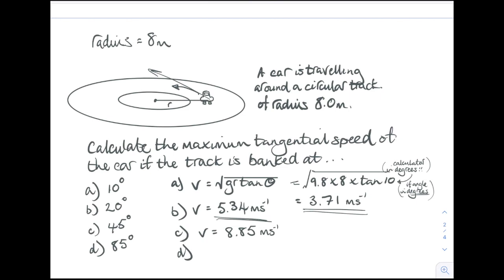As your angle tends towards 90, your velocity tends towards infinity. But at 85 degrees, the velocity comes out at 30 meters per second. So steeper bank angles give us greater maximum tangential speeds.